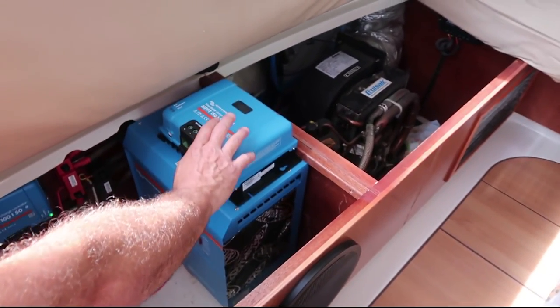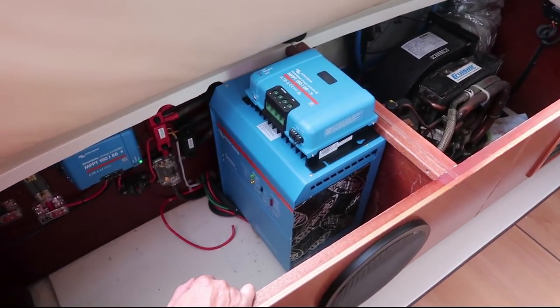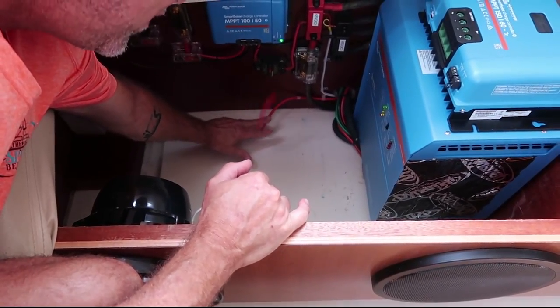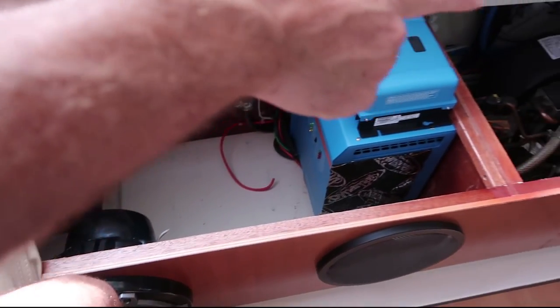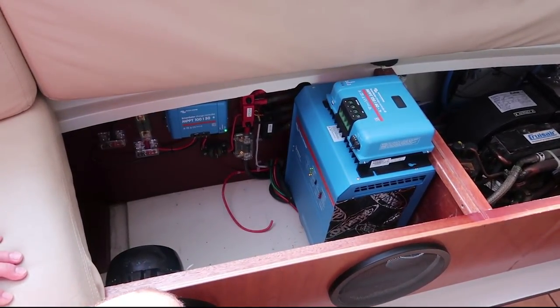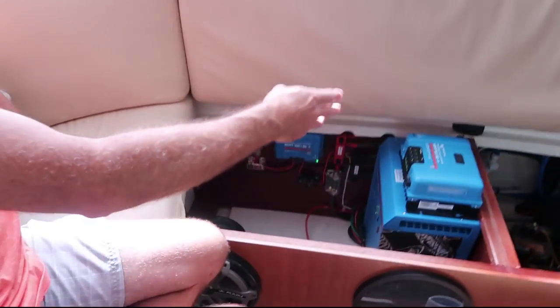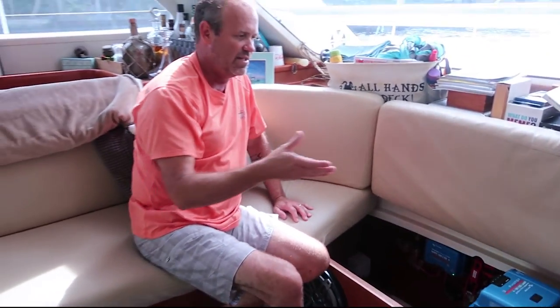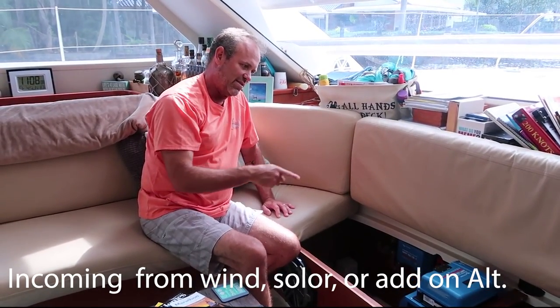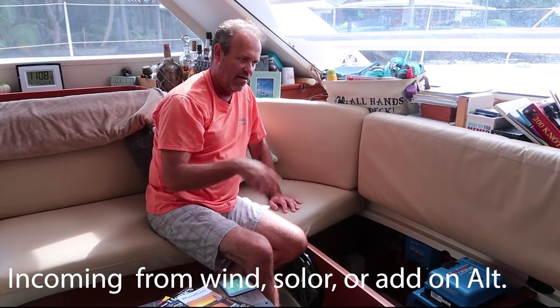Now we've got this guy up here. This is our 150-60 amp, and basically what that's going to do is we're going to mount that down here. As you can see here, I've already run the wire for the alternator, and we've got the wires over here for the solar. So this will be our solar controller. Basically it's going to take our 48 volts, or anything else that's higher voltage to charge our batteries, and that's going to feed our battery bank and help keep it charged when the generator's not running or we're not on shore power.